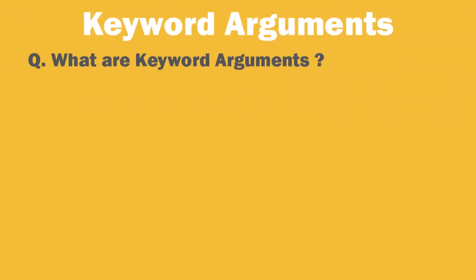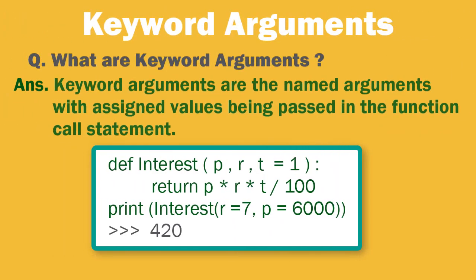Next let's see what are keyword arguments. Keyword arguments are the named arguments with assigned values being passed in the function call statement. So in this example, user can change the position of arguments as he is assigning them values by name.